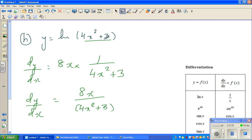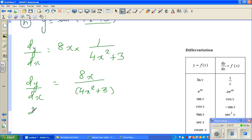So the function is defined at 0. Let me find the derivative at 0. So dy by dx at x equals 0 would be, this will become 0 over 3 which is 0. So the gradient at 0 is 0.